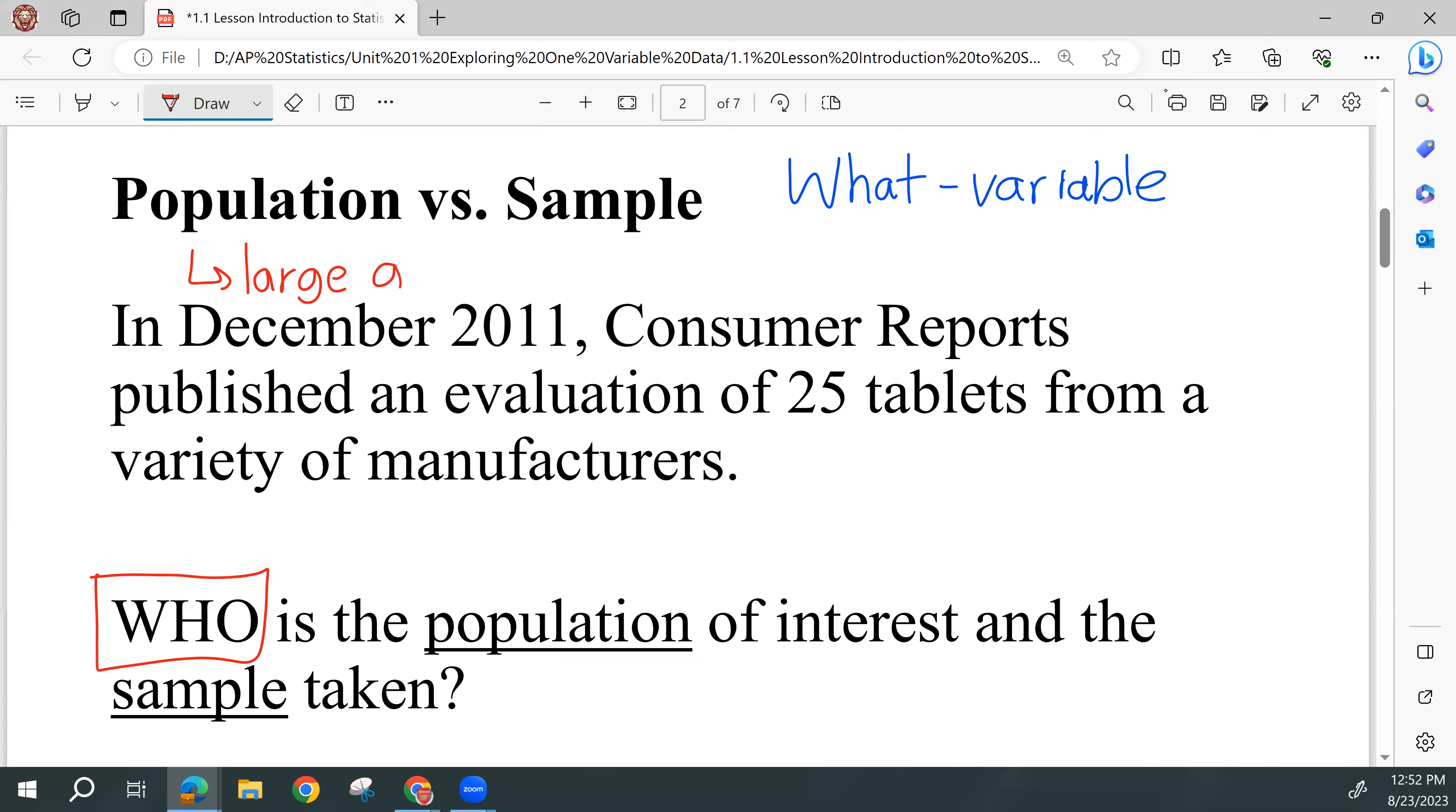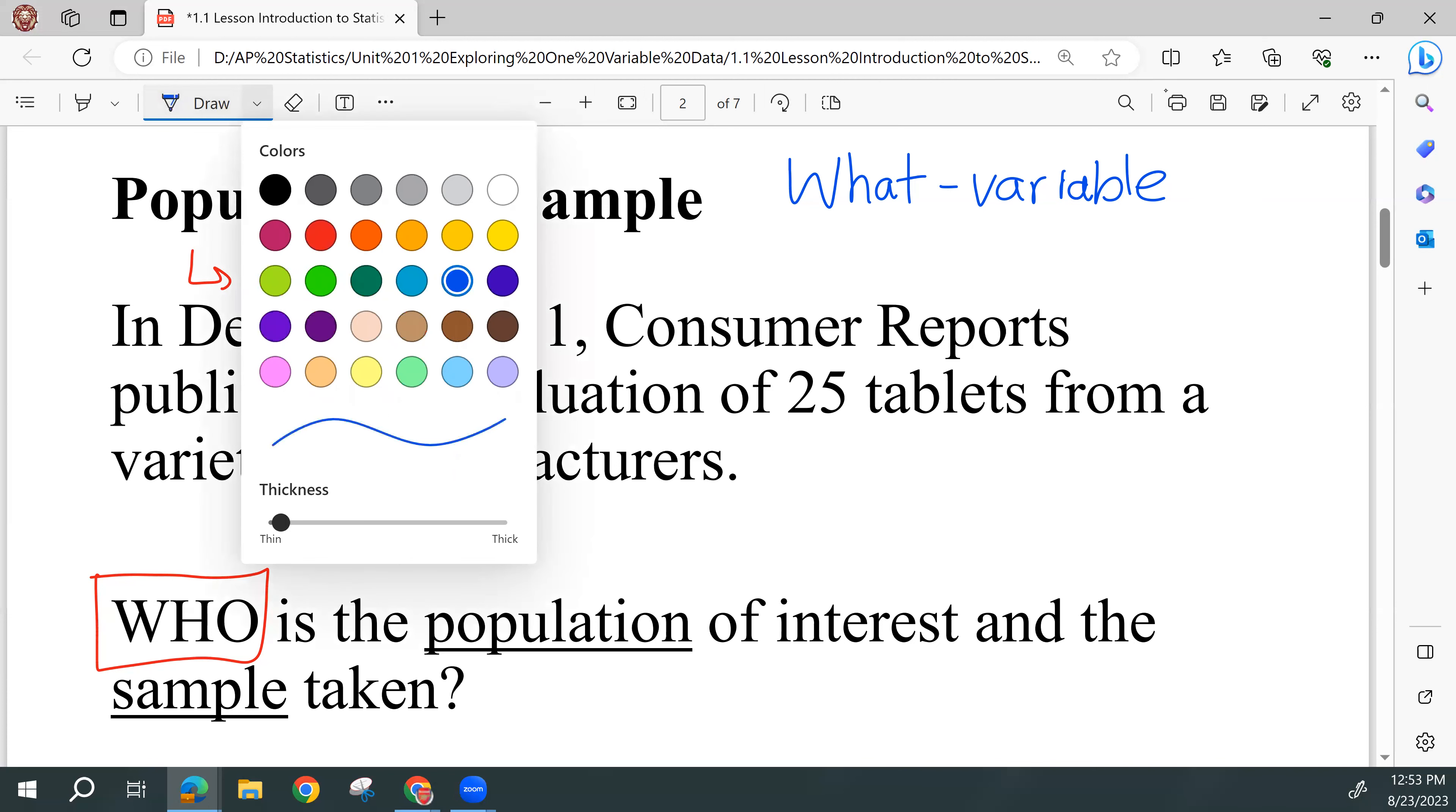Population is usually very large. And because a population typically, not always, but typically is very large, it's very hard to find out that piece of information, that variable, that thing of interest, the what. It's very hard to find that out about everybody in the entire population. And so what we end up doing is we take samples, and that is a smaller group.